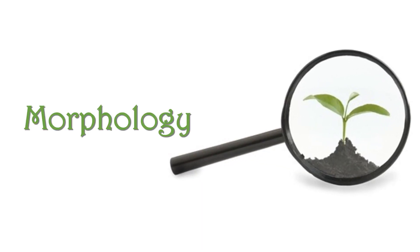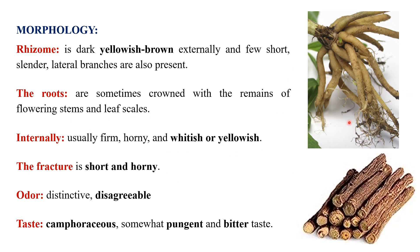The rhizome is dark yellowish-brown externally with few short slender lateral branches. The roots are sometimes crowned with the remains of the flowering stem and leaf scars. Internally it is usually firm, horny, and whitish or yellowish in color. It has a short horny fracture and is characterized by its distinctive disagreeable odor and a somewhat pungent and bitter taste.